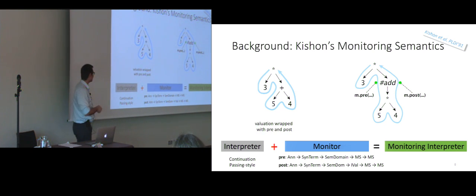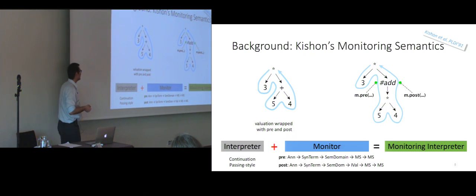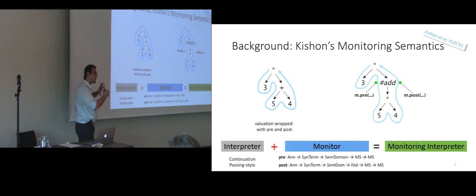The monitors are defined by two functions that take as arguments the annotation, the syntactic terms, the semantic domain of the language, and the monitoring state at the moment of the call, and return a new monitoring state. The post-processing function is similar, with the exception that the resulting value from the evaluation of the previous operation is passed as an argument. The nice thing defined in Kisson's monitoring semantics is the combination operator used to compose the interpreter with the monitoring semantics.